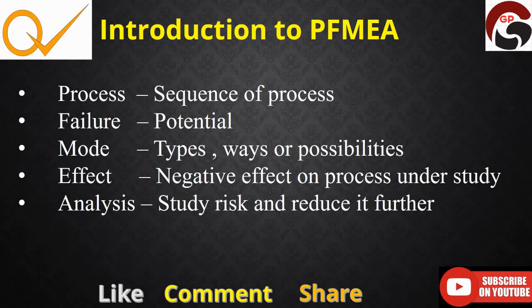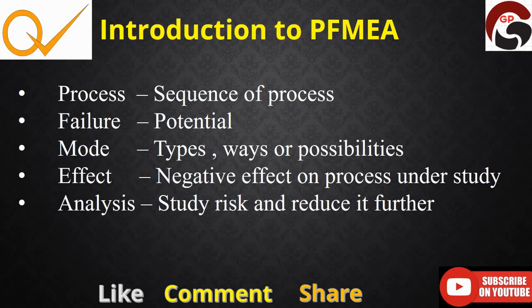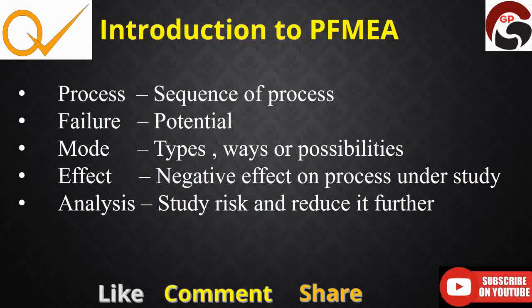In six sigma projects using the DMAIC methodology, FMEA is usually done at the early stage of the Improve phase to increase the probability of success. We need to identify the potential problems. We use it in any process or project where we are spending a lot of time and cost to find potential failure modes. We can focus on process FMEA, which can be used to improve process yield or performance when you have potential failures.